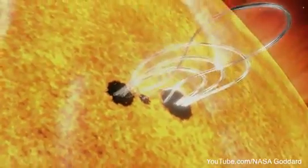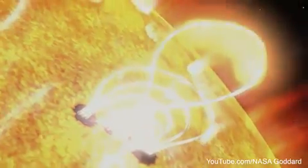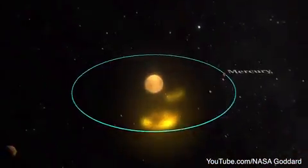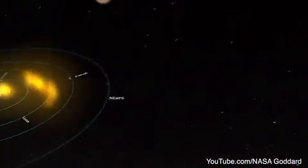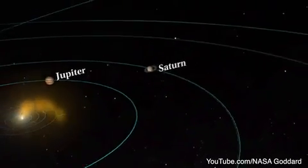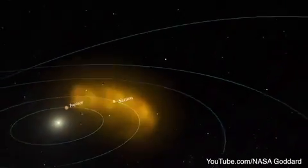These magnetic fields power solar flares and coronal mass ejections, which can affect Earth and other objects in the solar system. As the sunspots increase, so does the frequency and severity of flares and CMEs.